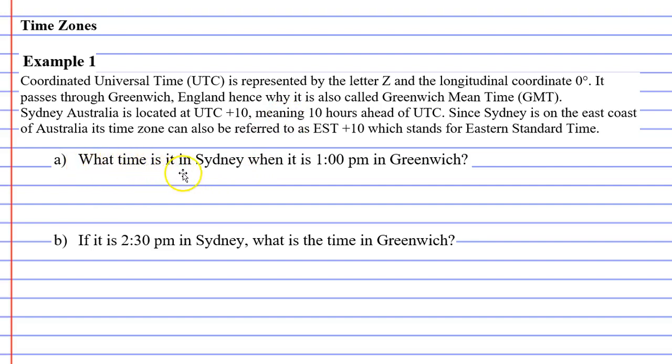So looking at question A, what time is it in Sydney when it is 1 pm in Greenwich? Now, we know that Sydney is 10 hours ahead of Greenwich because Sydney is plus 10. And Greenwich is just where the zero is. So all we need to do is just add 10 hours. So 1 pm plus 10 hours gives us 11 pm or 11 o'clock pm. That's question A, done.